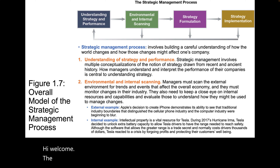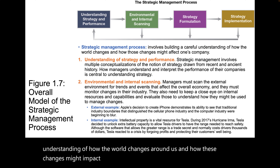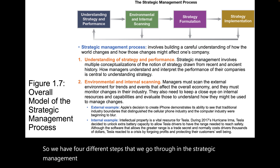The strategic management process involves building a careful understanding of how the world changes around us and how these changes might impact our organization. We have four different steps that we go through in the strategic management process, where we pay attention to our own organization and the environment around us.